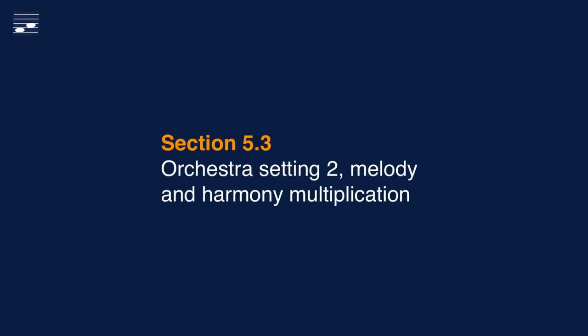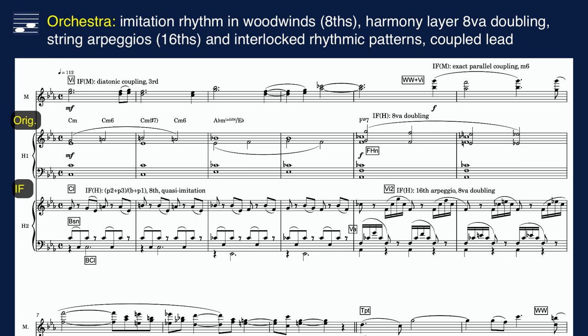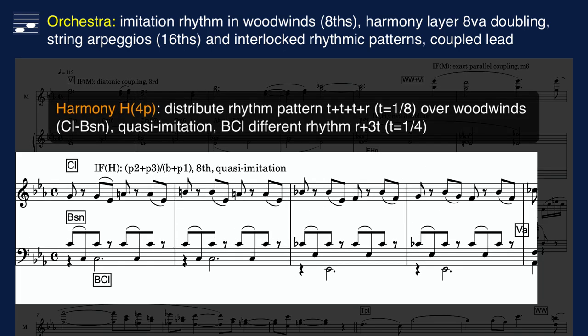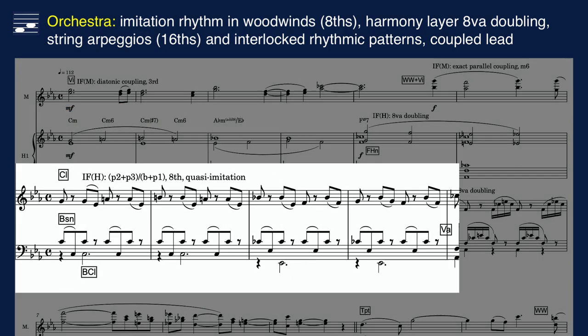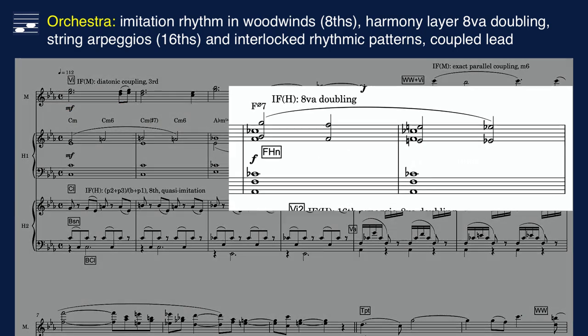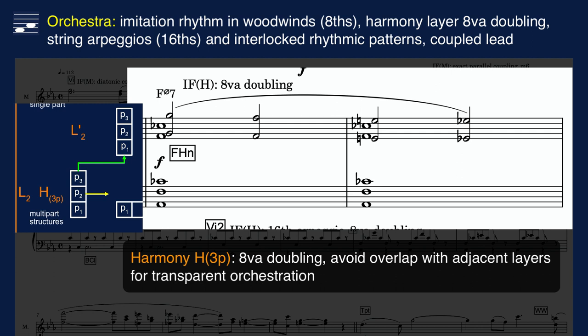You may have noticed how the woodwinds in the eighth phrase played harmony layer octave doubling, an aspect to be discussed in more detail in the next example — also for orchestra. Now the quasi-imitation of an eighth-note rhythmical pattern is played by two woodwinds, clarinet and bassoon, with an independent bottom part for bass clarinet. Like in the previous example, in measure 5 there is harmony layer octave doubling.